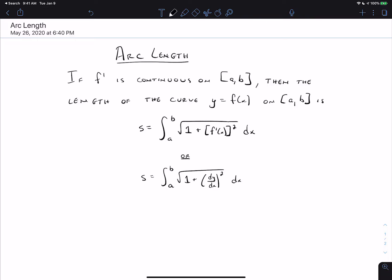then the length of that curve is given by the integral from a to b of the square root of 1 plus the derivative squared dx. You could write that in two different forms depending on how you want to represent the derivative.